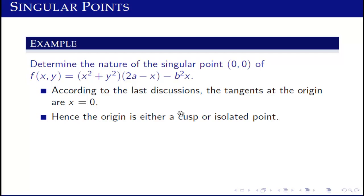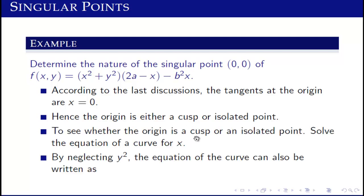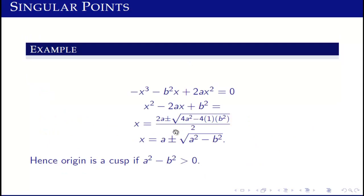Hence the origin is either a cusp or an isolated point. We solve the equation for x, neglecting y. After solving, the origin is a cusp if a² - b² is greater than zero.